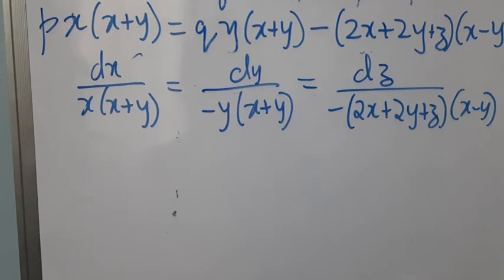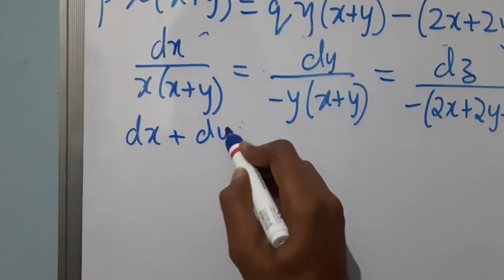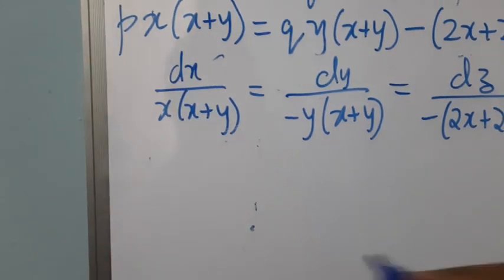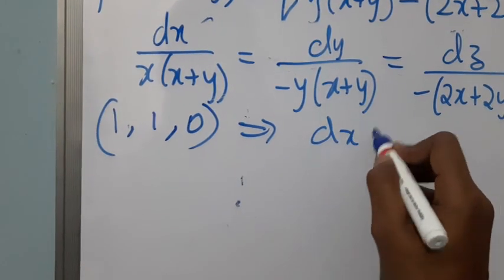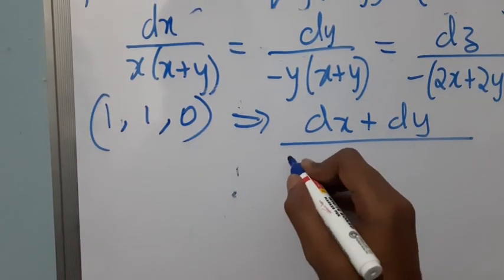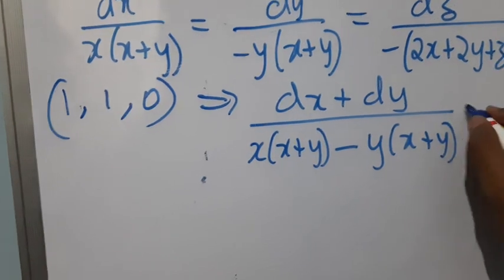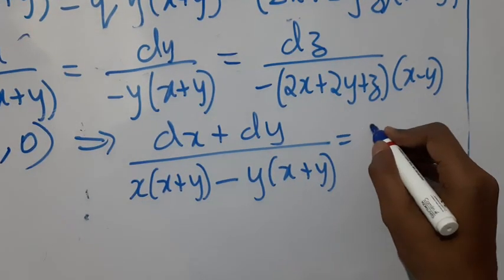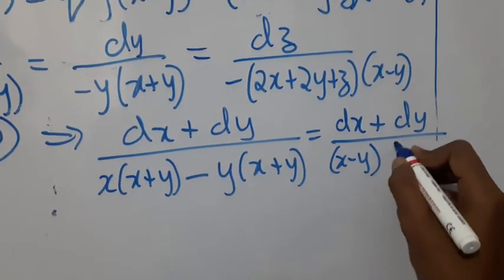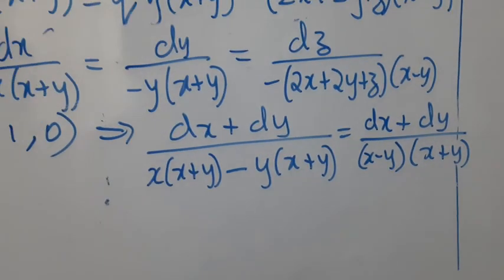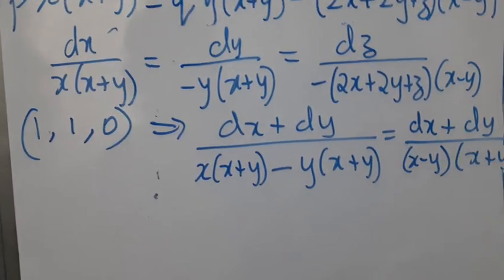If we choose multipliers 1, 1, 0, we get dx plus dy divided by X(X+Y) minus Y(X+Y), which simplifies to dx plus dy divided by (X minus Y)(X+Y). This gives us an idea for choosing further multipliers.